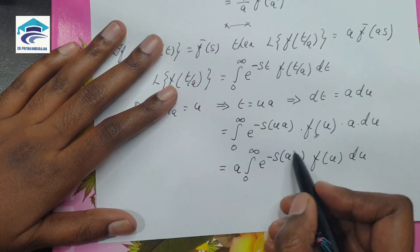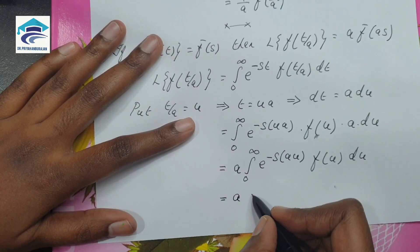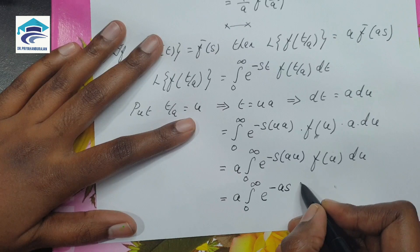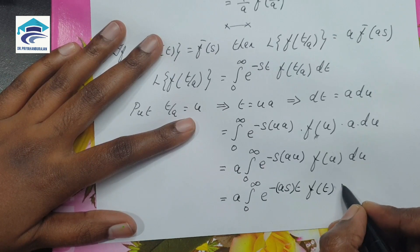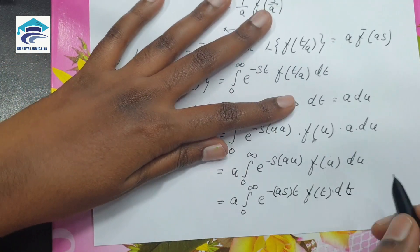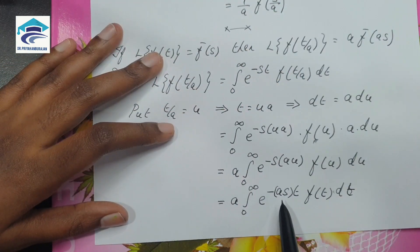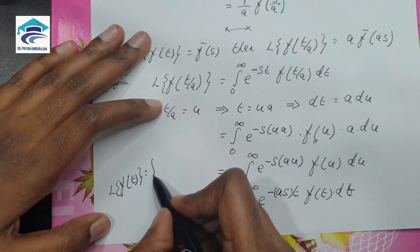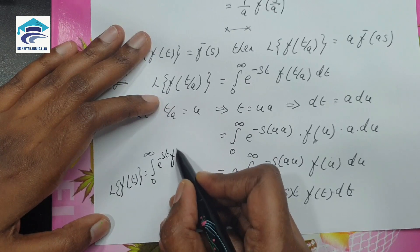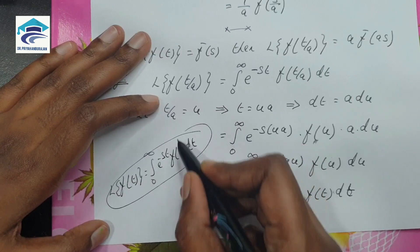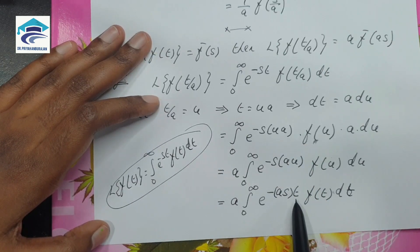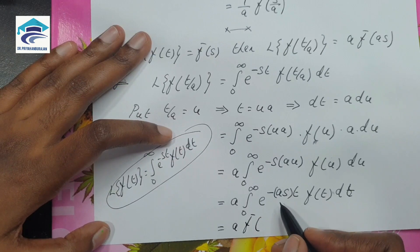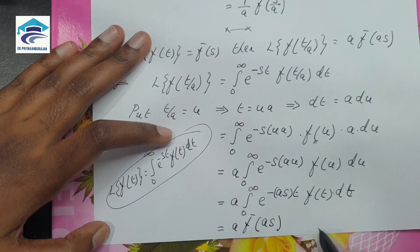For convenience let us change u to t. This becomes a times the integral from 0 to infinity of e to the power minus as times t, times f(t) dt. Comparing with the Laplace transform formula, except for s everything remains the same — instead of s we have as. So this can be written as a times F̄(as), and hence the proof.